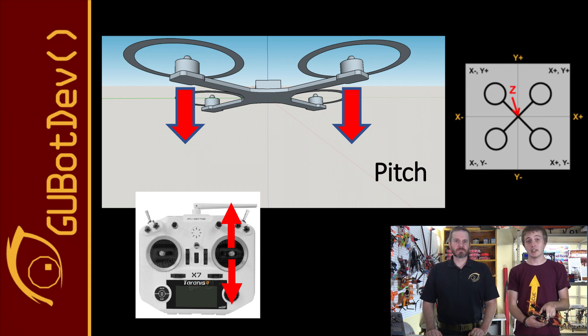Moving the right stick up increases the throttle to the two motors in the back of the drone, call them the negative y motors. The negative y motors will overpower the positive y motors, causing the drone to pitch forward and move forward. Pull the right stick down, the positive y motors will overpower the negative y, causing the drone to pitch back and move backwards.